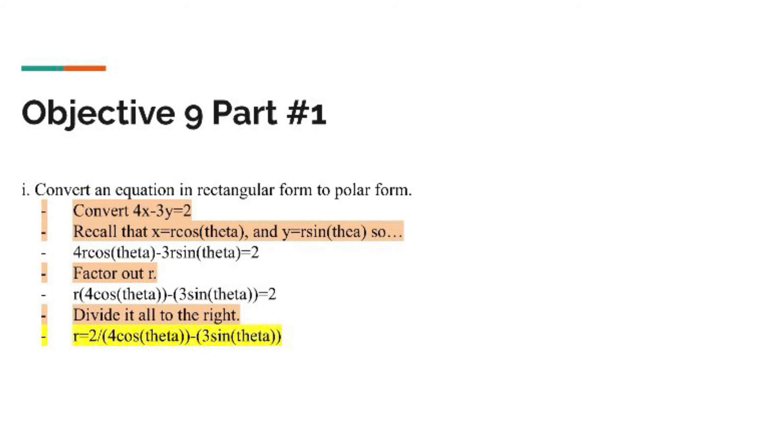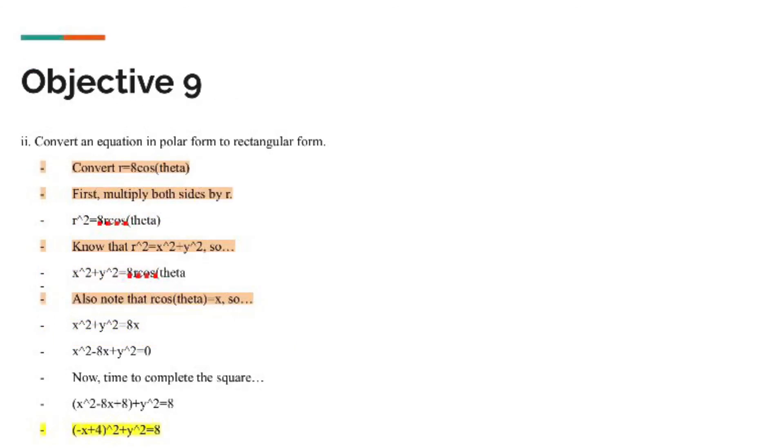Factoring out the r got me r times 4 cosine of theta minus 3 sine theta equals 2. Since that's all one item now, all under one parentheses with r singled out, you can divide it to the right and get your answer.